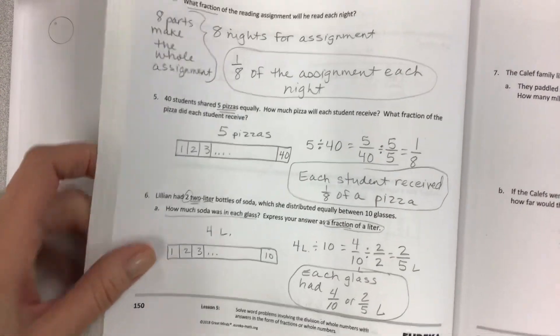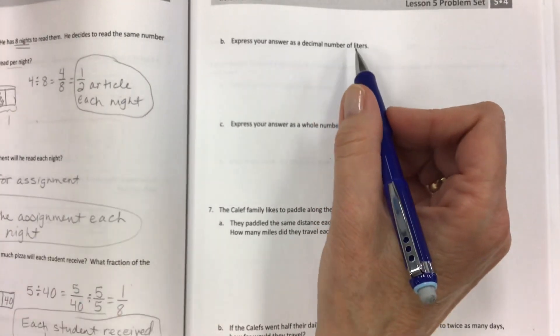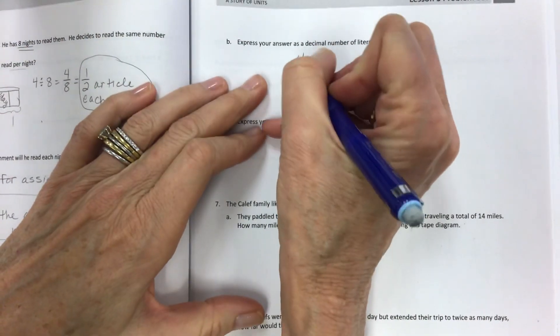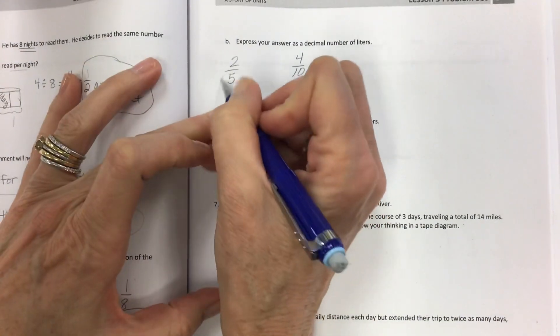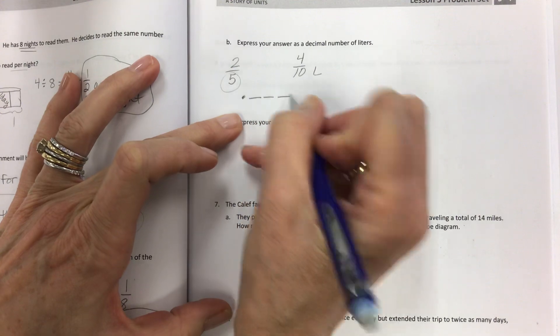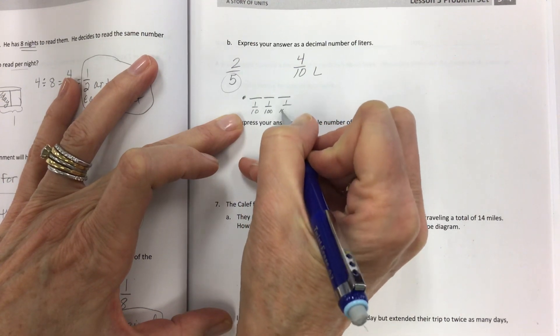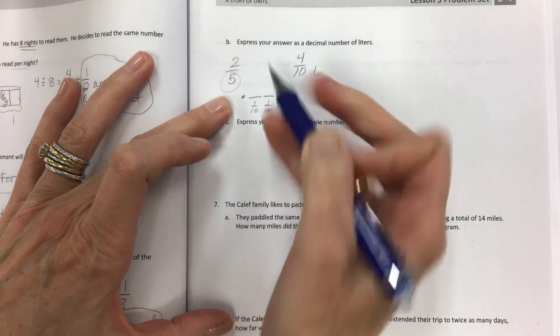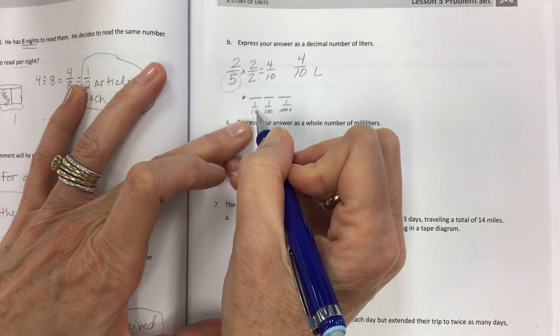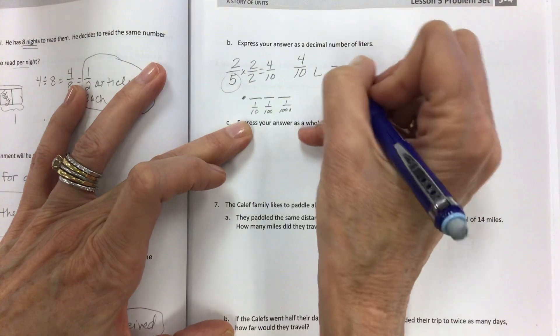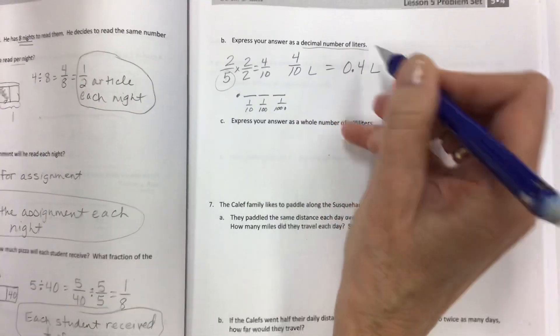Now there's more part B and part C up on the next page. It says express your answer as a decimal number of liters. So that's okay. I'm just going to take my 4/10 liter. Not the 2/5. Why not 2/5? Because fifths do not have a place value position. This is tenths. This is hundredths. This is thousandths. Fifth does not fit there. So you put it back to 4/10 so that you can get this value. Once you have 4/10, easy peasy. You just write it a different way. 4/10 of a liter. This is a decimal number of liters.